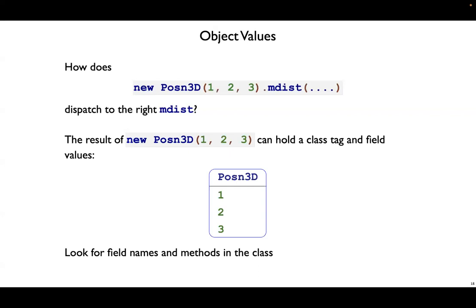All we need to store in the object are the class tag and the field values. For Posn3D, that means we need the symbol Posn3D and the fields here: 1, 2, 3. The object doesn't need to store the methods because those are up in the class, and also the names of the fields can be stored in the class.